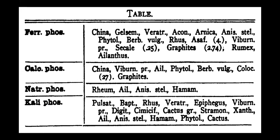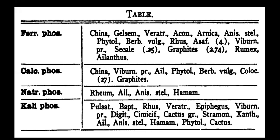Paratrum, Epiphagus, Viburnum Prunifolium, Digitalis, Cimicifuga, Cactus Grandiflorus, Stramonium, Xanthoxylum, Eleanthus, Anistelata, Hamamelis, Phytolacca, and Cactus all carry Kali Phos. This is important to understand: why does Rhus Tox, after being given, cause the patient to become calm? We know restlessness is present in Rhus Tox, but why? Because it carries Kali Phos, and Kali Phos has a capacity to tranquilize the patient.